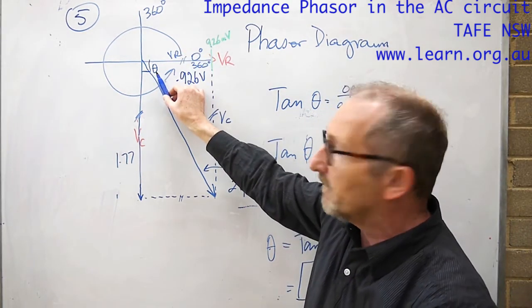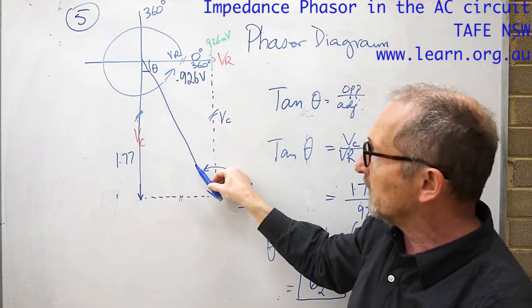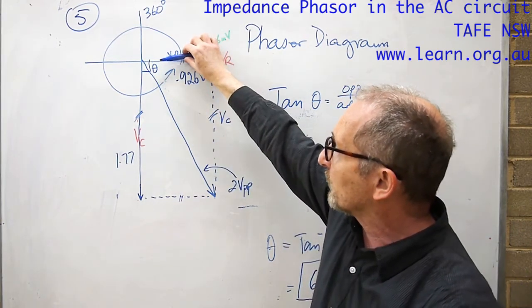Again, the phase angle in the circuit theta is the difference between the supply voltage and the circuit current.